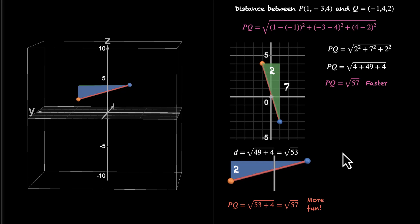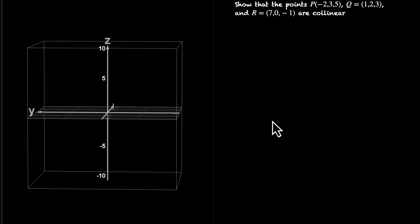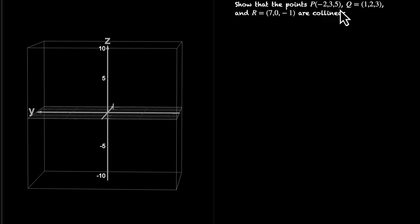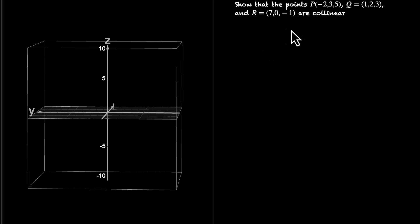Let's solve one more problem. Show that the points P, Q, and R are collinear. The points are P(-2, 3, 5), Q(1, 2, 3), and R(7, 0, -1). Pause the video and figure out how to approach this problem.